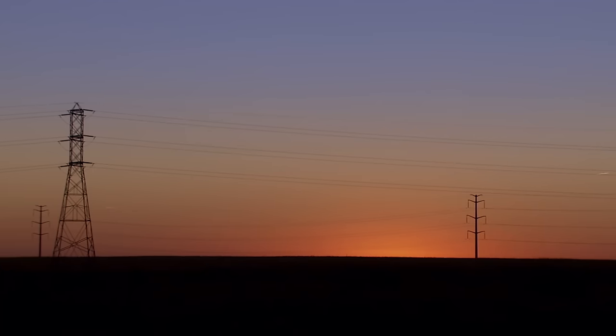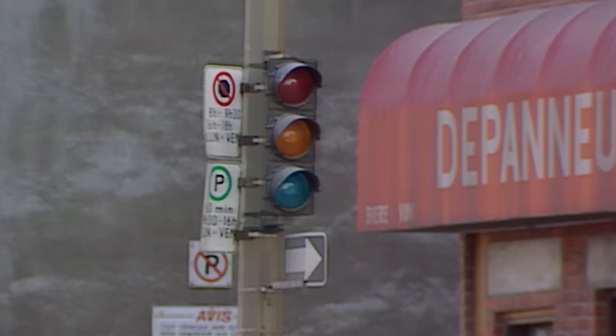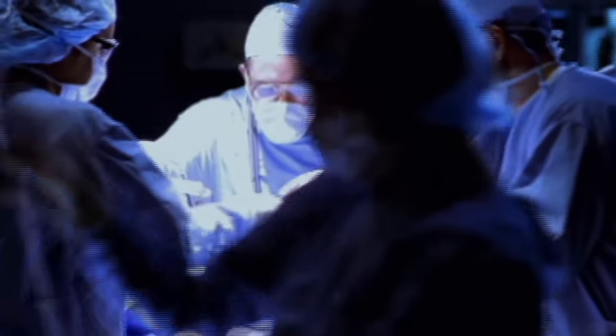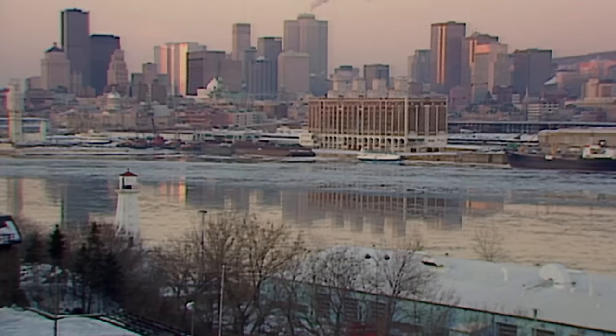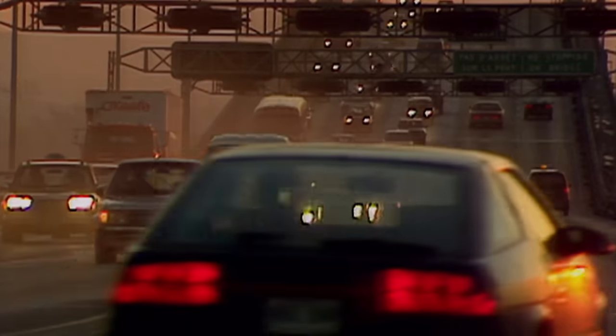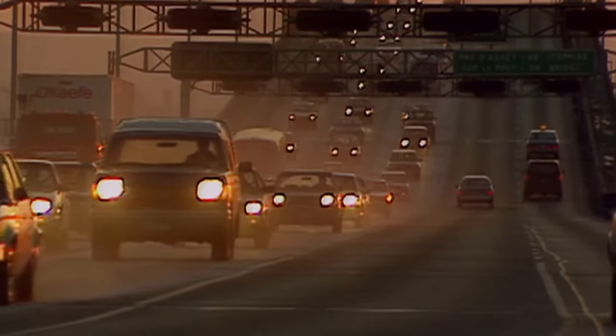At dawn, the thermometer reads just eight degrees, and the power's still out. Life or death work runs on emergency generators. The blackout lasts 12 hours. But the disaster could have been much worse.